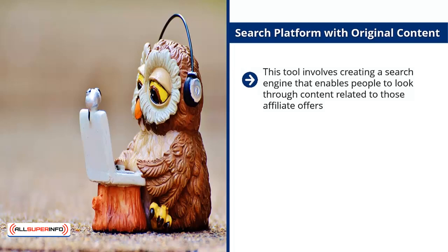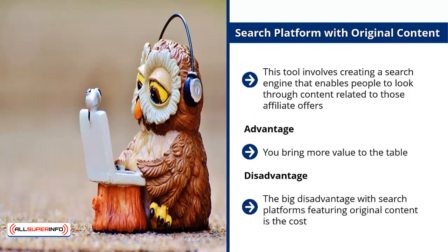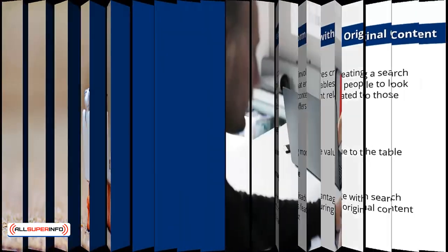Search platform with original content. This tool involves creating a search engine that enables people to look through content related to affiliate offers. Great examples include airline and hotel booking websites. Advantage: you bring more value to the table — people can cross-reference different products to make the right choice or find specialized information. Disadvantage: the big downside is cost. Either you know how to program specialized search engines yourself, or you'll have to spend quite a bit of money getting it done.